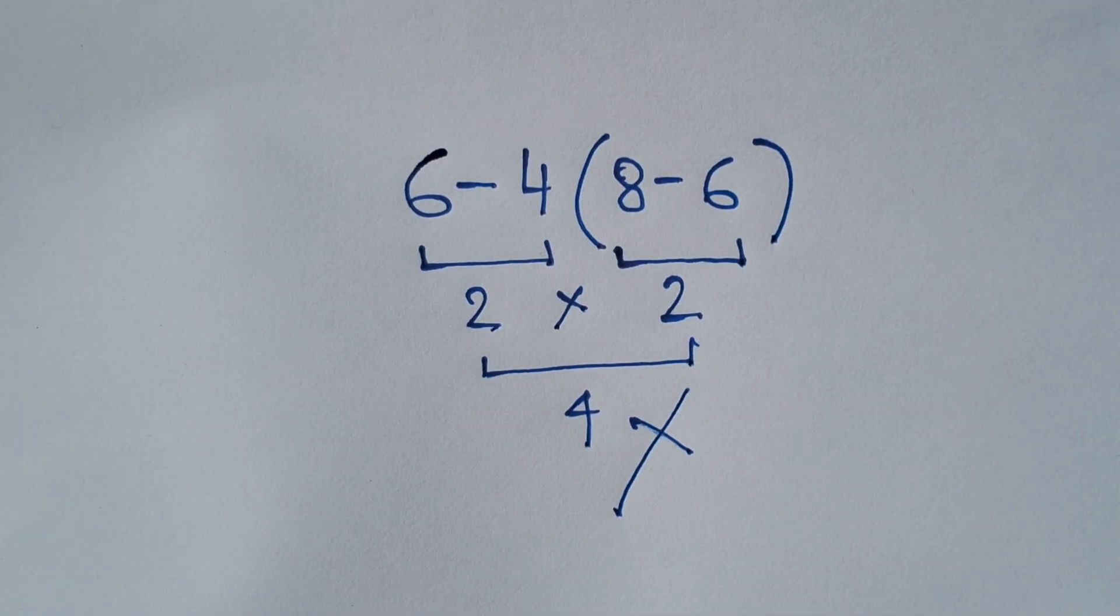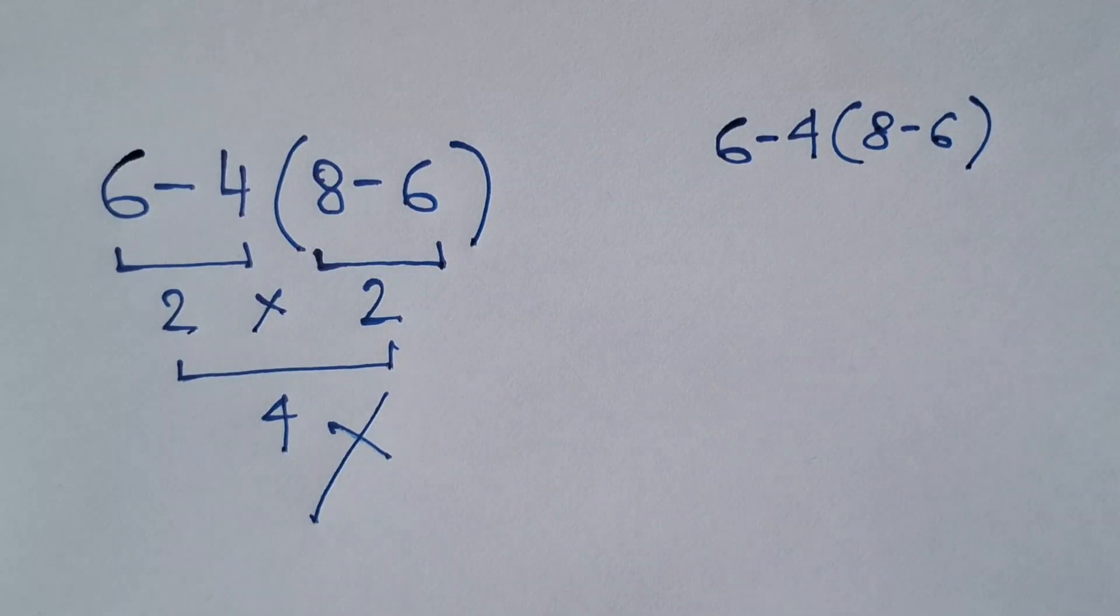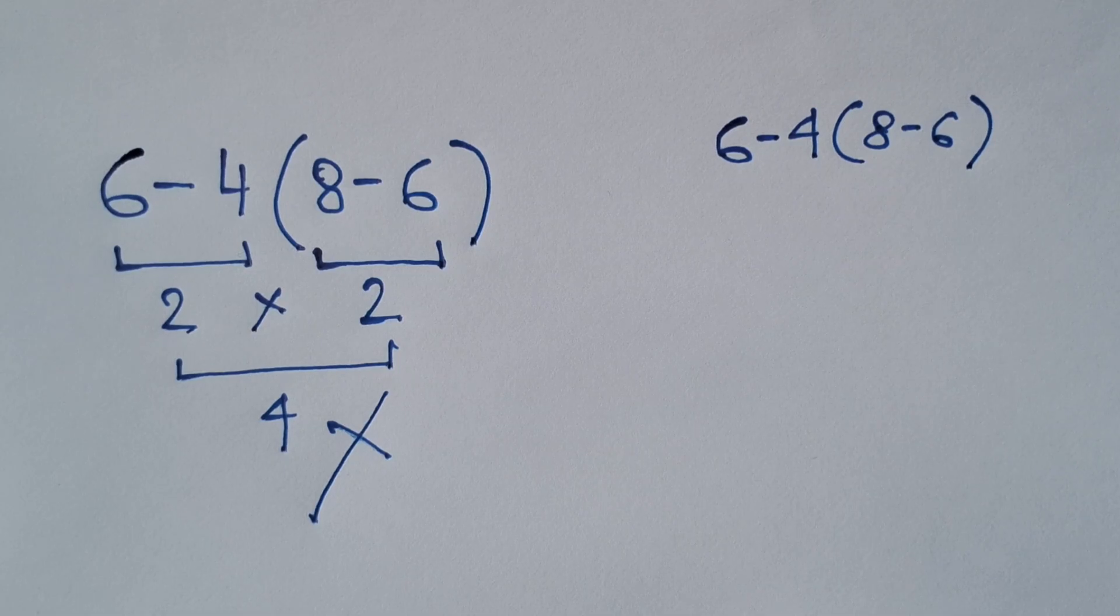According to the order of operations which is called BODMAS where B stands for brackets, O for orders, D for division, M for multiplication, A for addition and S for subtraction. First, we have to solve the bracket, then multiplication, then subtraction.